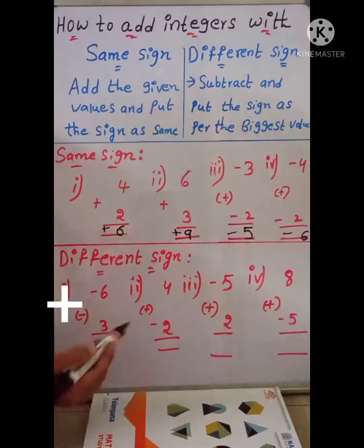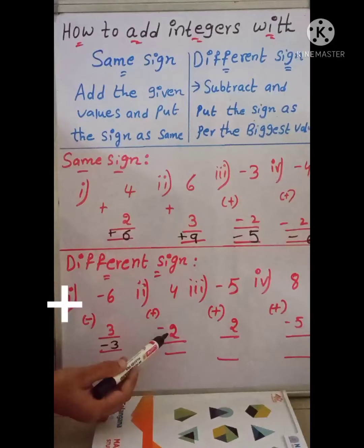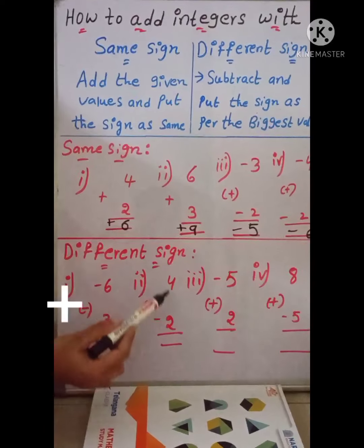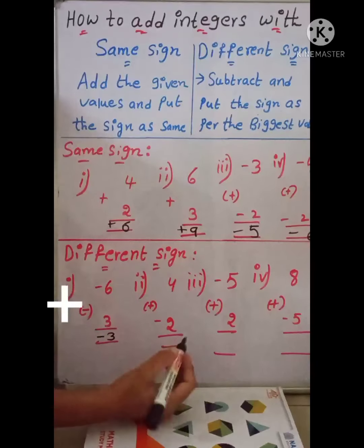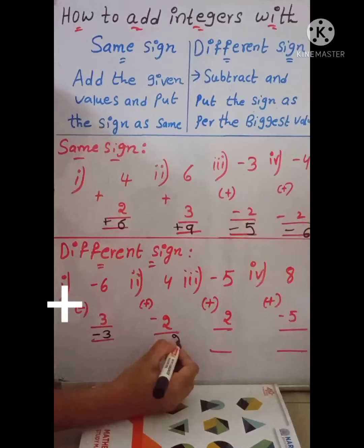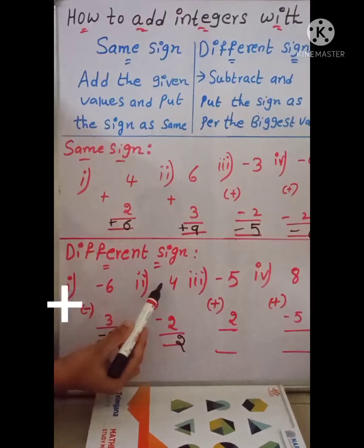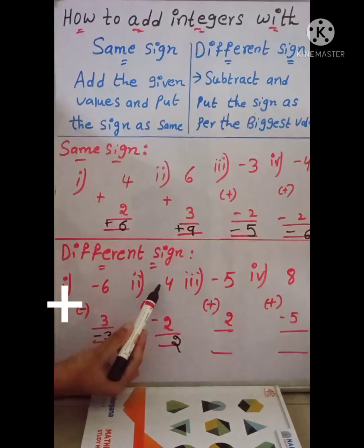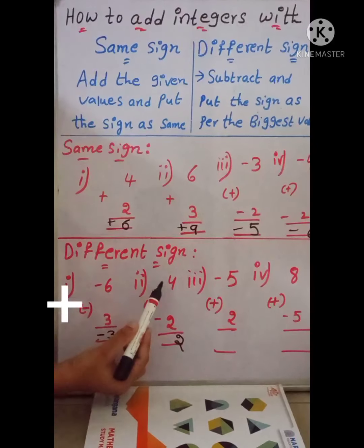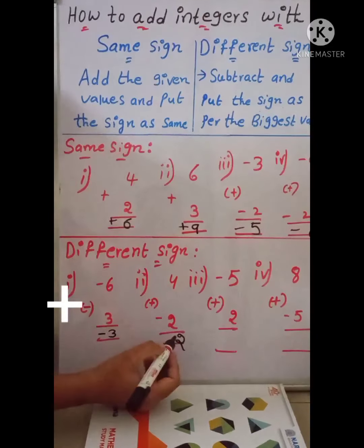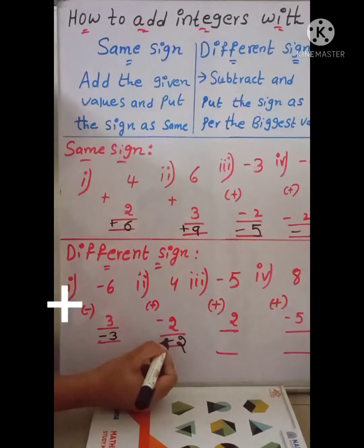The next example is plus 4 minus 2. Here we have different signs. Just subtract: subtract 2 from 4. 4 minus 2 equals 2. What is the biggest value? 4 is the biggest value. What is the sign of 4? It is plus, so put the sign as plus. The answer is positive 2.